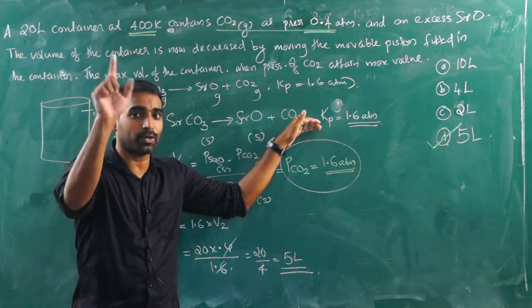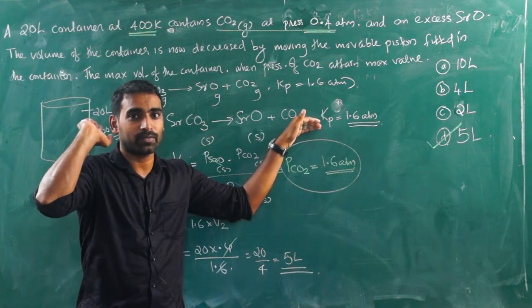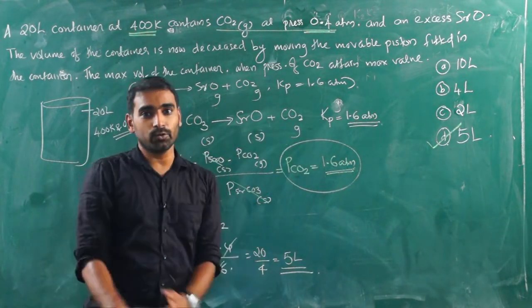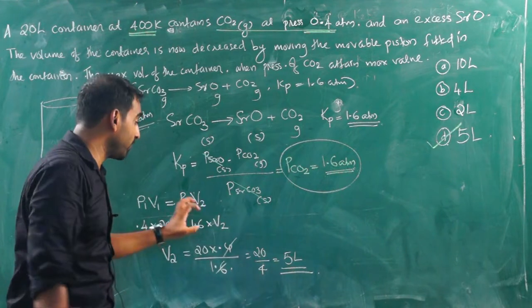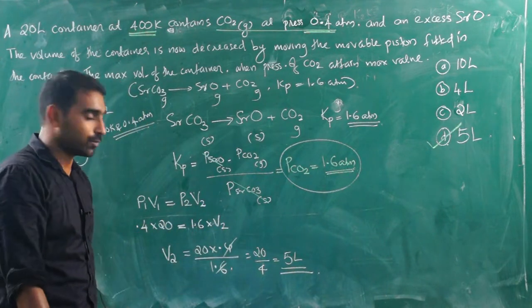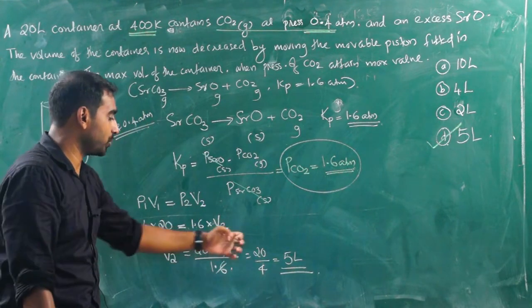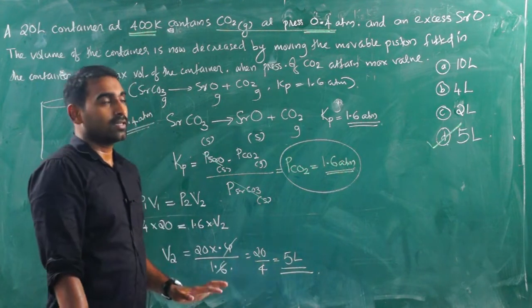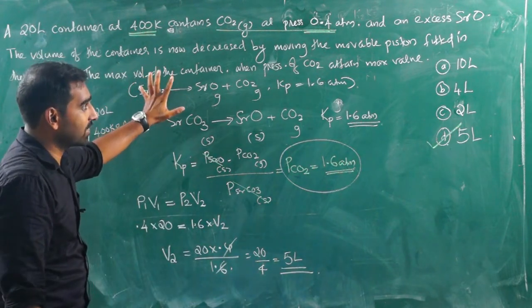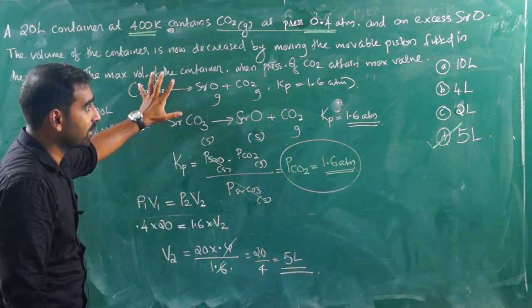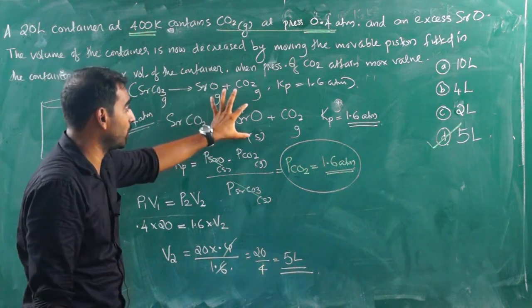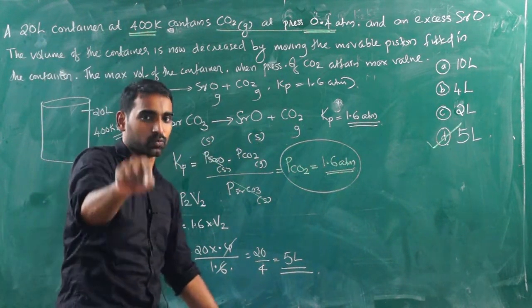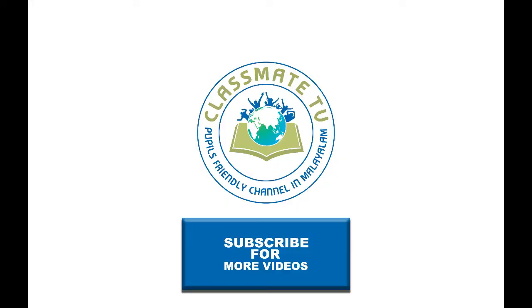Using Boyle's Law, P₁V₁ equals P₂V₂, we calculate V₂ equals 20 by 4, that is 5 liters. In this problem, equilibrium concept is used first, then states of matter. For SrO solid and SrCO₃ solid, the equilibrium constant is taken as 1. Thank you.